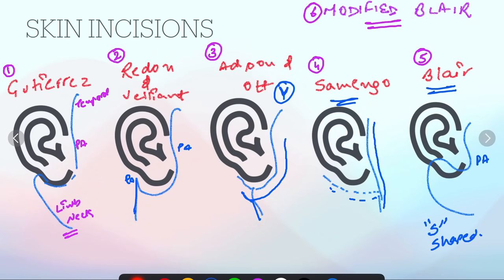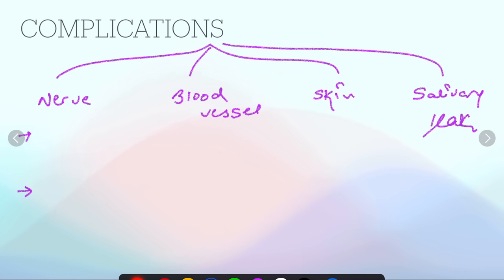For this, it is having a pre-auricular component and extends to the neck. It has the disadvantage of scar, so S-shaped incision with scar is Blair incision. Currently, Modified Blair is used in which skin incision is given in the pre-auricular region.